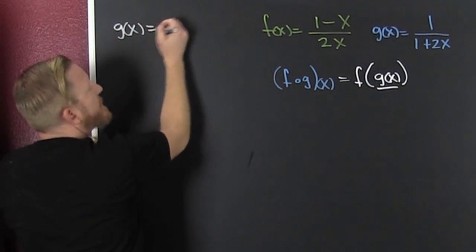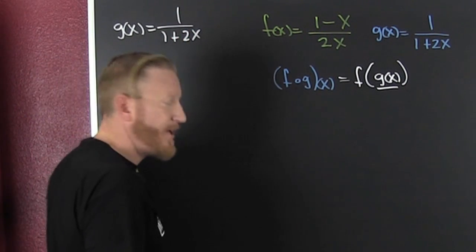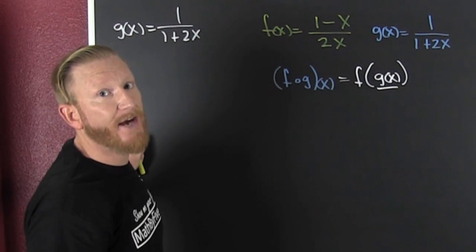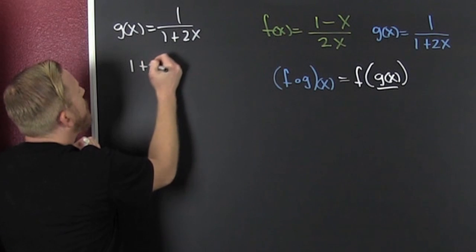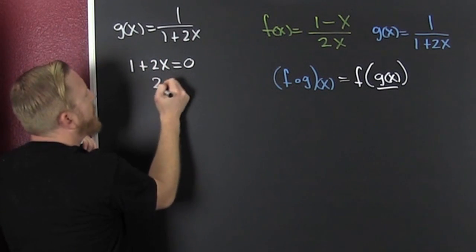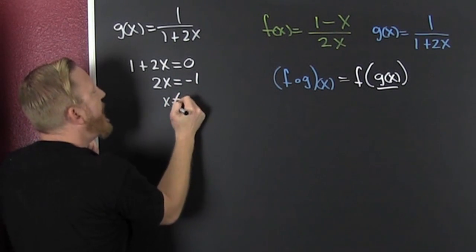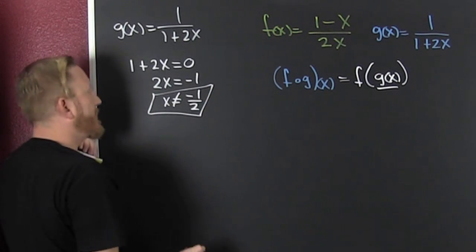Here, g of x is 1 over 1 plus 2x. What's next? You can never divide by 0. So you ask yourself, oh denominator, where are you 0? And then you solve that on them. That's minus 1 half. And then x cannot be minus 1 half. We'll just put that in our pocket.